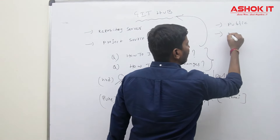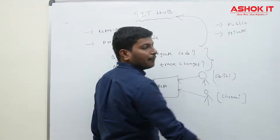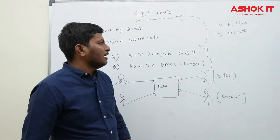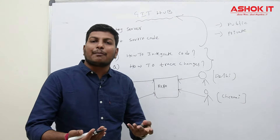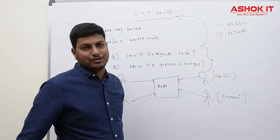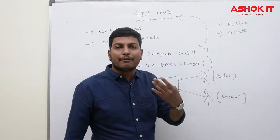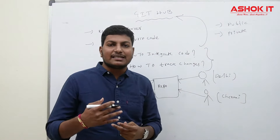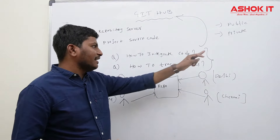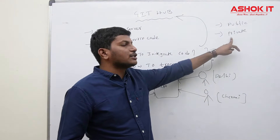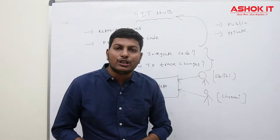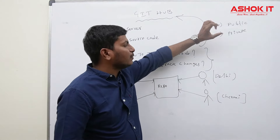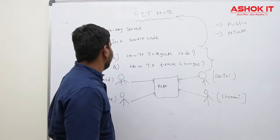Once you sign up on GitHub, you can create a repository. There are two types of repositories: public repository and private repository. A public repository means anybody can access and view the content, but they cannot modify it without permission. A private repository means nobody can see or modify it unless you explicitly grant permissions to your team members.